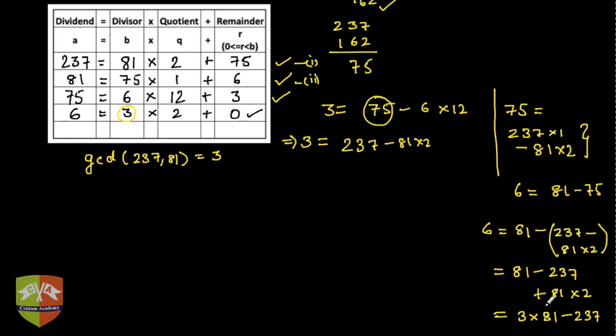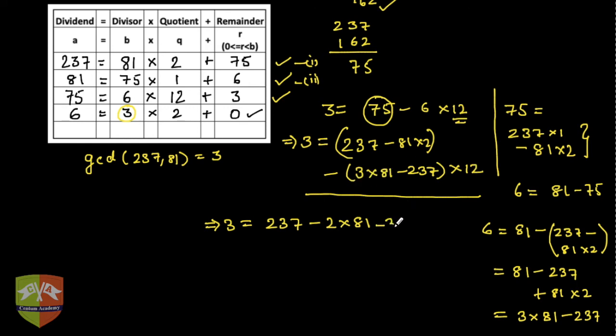Now 75 was expressed like this. How can I replace 6? 6 can be replaced as 3 into 81 minus 237 and then multiply it by this 12. If you notice, I have all the terms in this expression which have 237 or 81. Let us simplify it further. I get 3 equals 237 minus 2 into 81, and then from here 12 into 3 into 81, that is minus 36 times 81, and then minus minus plus, it is 237 into 12.